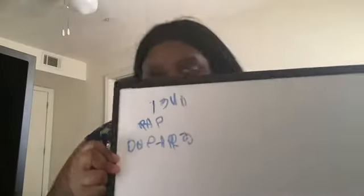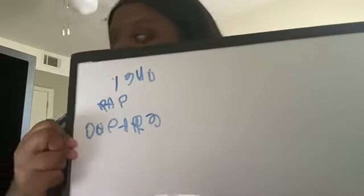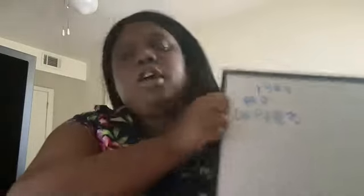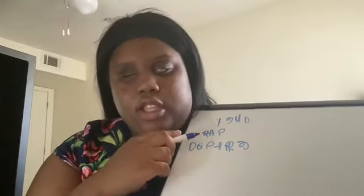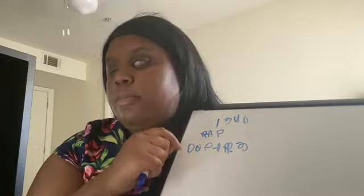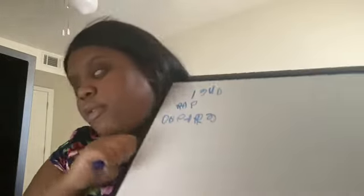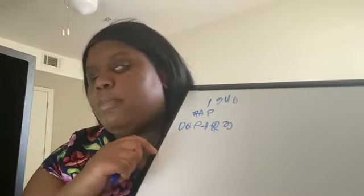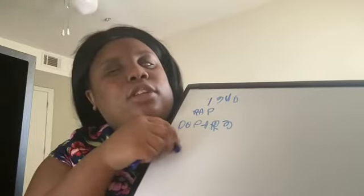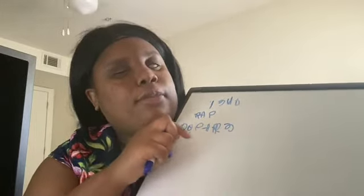So, what I wrote on my board — I can try to show you guys — is this. I pretty much wrote the course number, the assignment, which I wrote as 'RAP' which means Reaction Paper, and then I wrote 'due' and then 'April 3rd,' so that is when it is due.